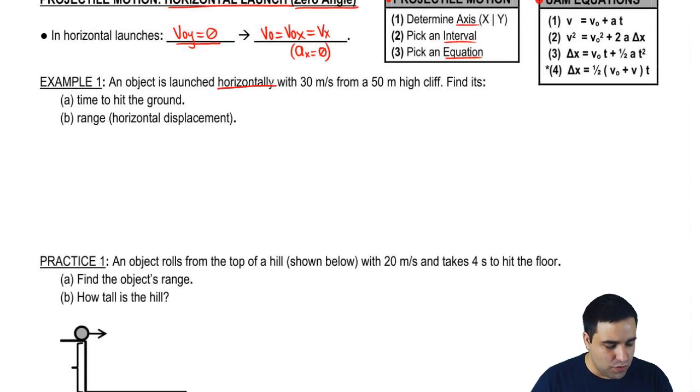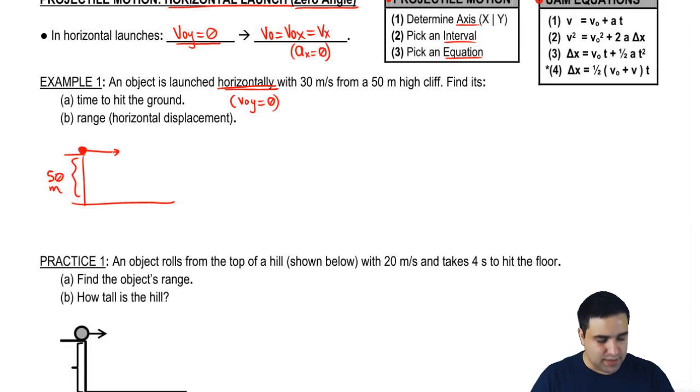An object is launched horizontally. This tells us that the initial velocity in the y-axis is zero. It's launched from a 50-meter high cliff or a building or whatever. So it starts here, and it's launched horizontally, so it looks like this, flat in the x-axis, with 30. So this 30 is my initial velocity. I can think of this as my initial velocity in the x-axis because it is entirely in the x-axis. Or I can think of this as my Vx, which never changes. These are all the same.